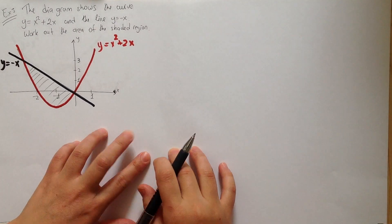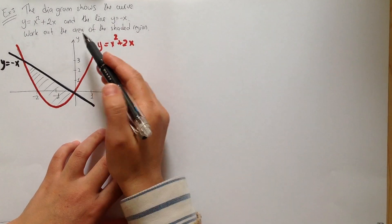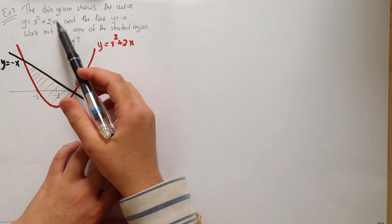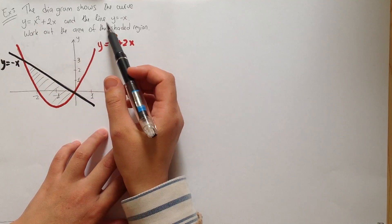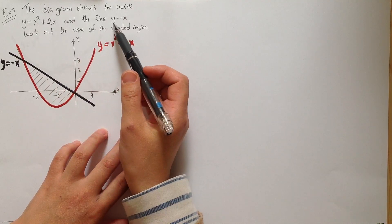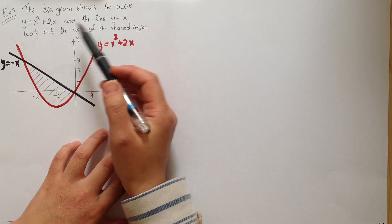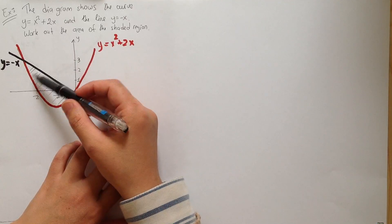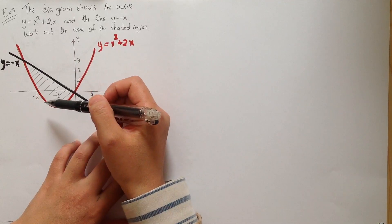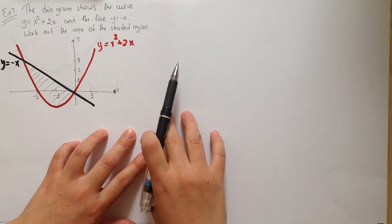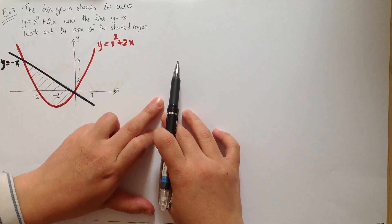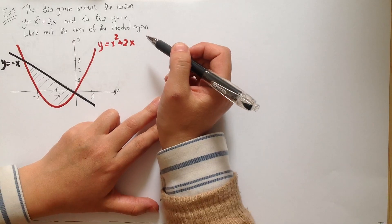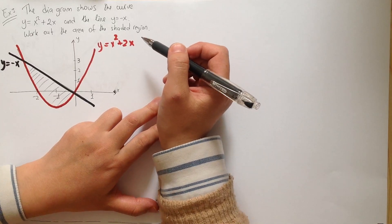The second example. The diagram shows the curve y equals x squared plus 2x and the line y equals minus x. We need to work out the area of the shaded region. So first of all, we have to find the intersection points.